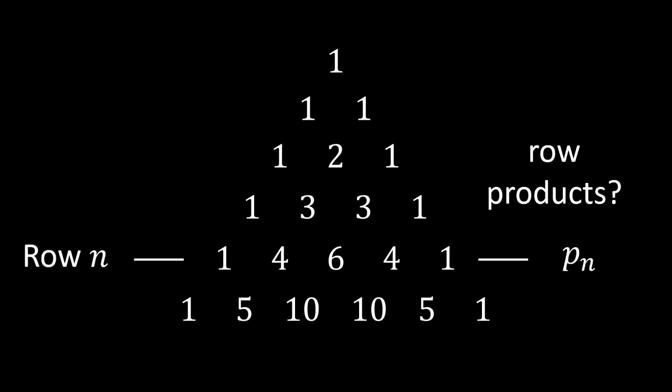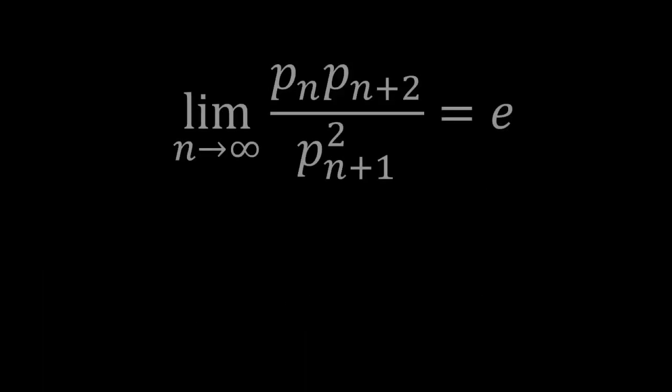Now, let us call the product of the terms in row n by Pn. And surprise, the limit of this random looking fraction actually converges to e as n tends to infinity.